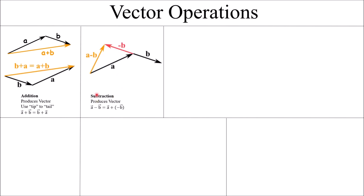Subtraction is very similar to addition. We take A and B, but flip B around — so A minus B can be viewed as A plus negative B. If we take B and rotate it 180 degrees, we get negative B, and then we can perform addition from there.